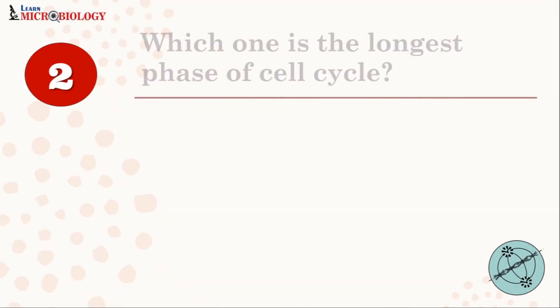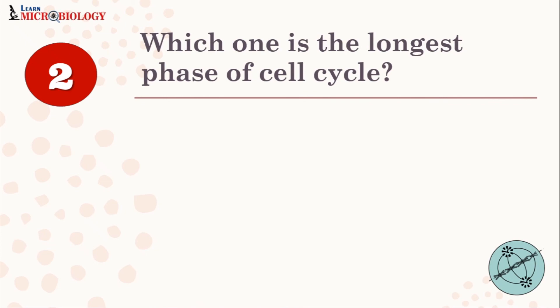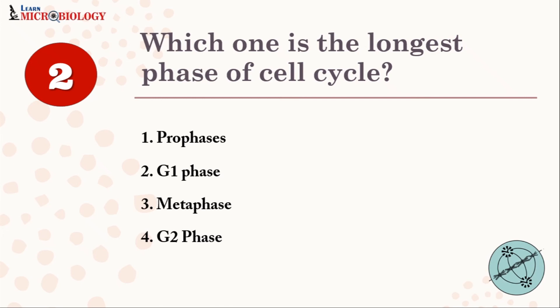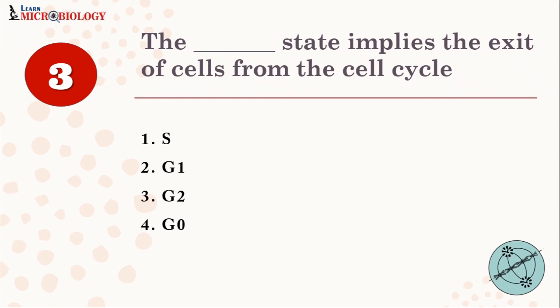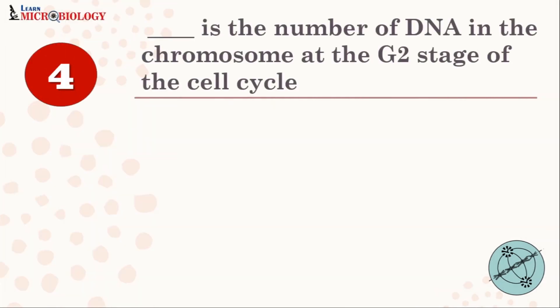Question 2: Which one is the longest phase of the cell cycle? Option 1: prophase; Option 2: G1 phase; Option 3: metaphase; Option 4: G2 phase. Question 3: The number of DNA per chromosome at the G2 stage of the cell cycle — Option 1: 0; Option 2: 1; Option 3: 2; Option 4: 4.